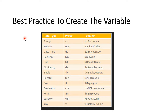To create a user defined variable, we use best practices. For example, if you are using a string variable, you have to use a prefix called 'str'. If you are using a number variable, you have to use 'num'. Like this, we have many other best practices for the subtypes of variables.